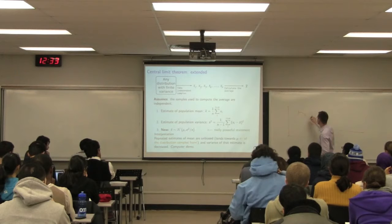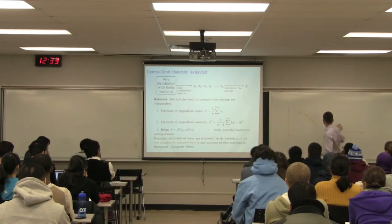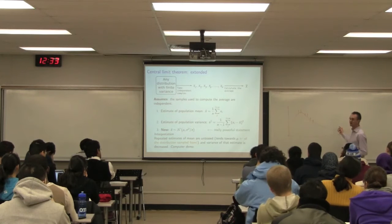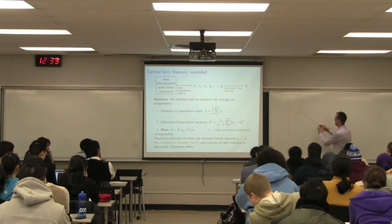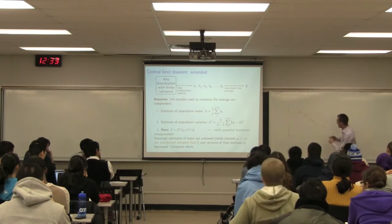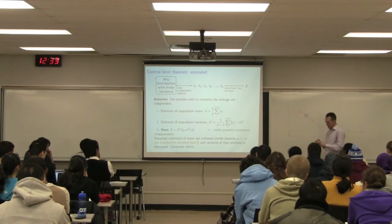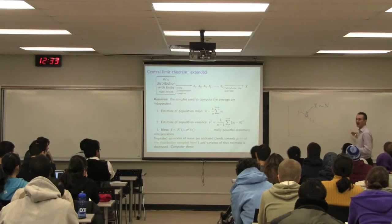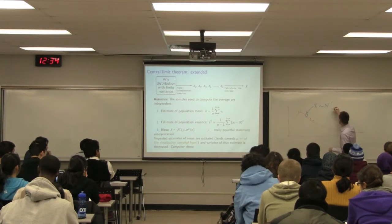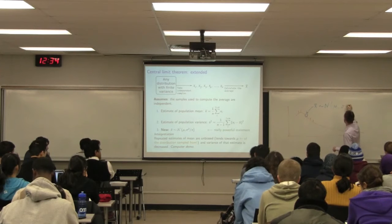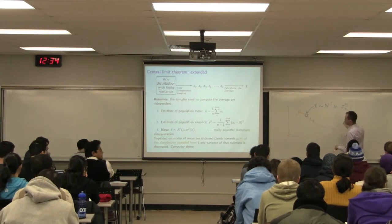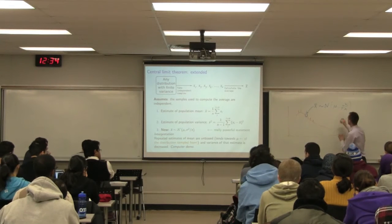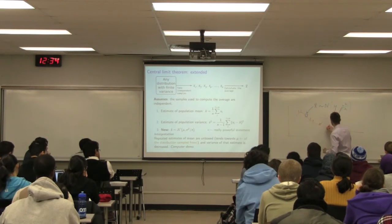We're taking independent samples from this distribution — picking values independently. We compute the average of those nine values. That average, x-bar, comes from the normal distribution even though the underlying data is not normal. It's going to have mean mu and variance sigma-squared over n, where mu and sigma refer to the original distribution — the population mean and variance.